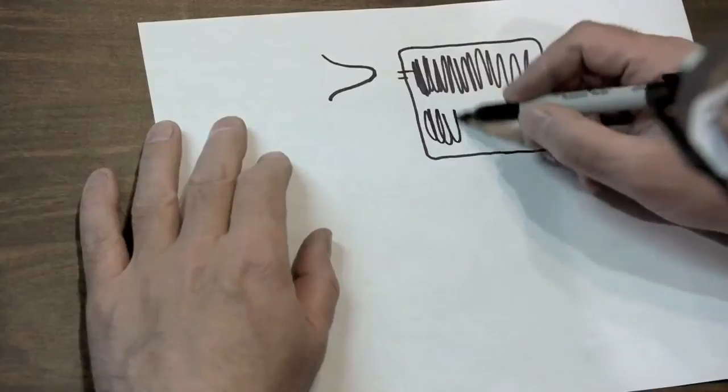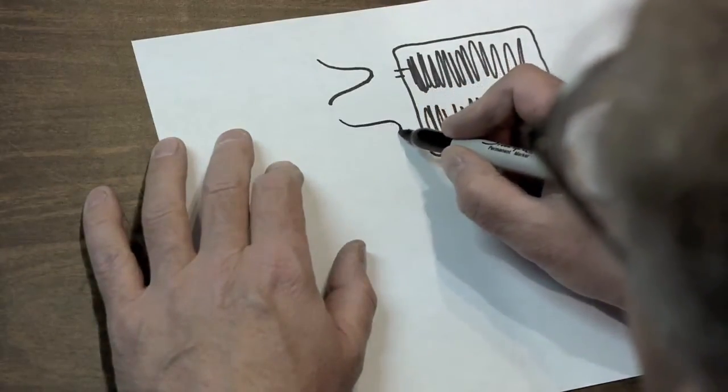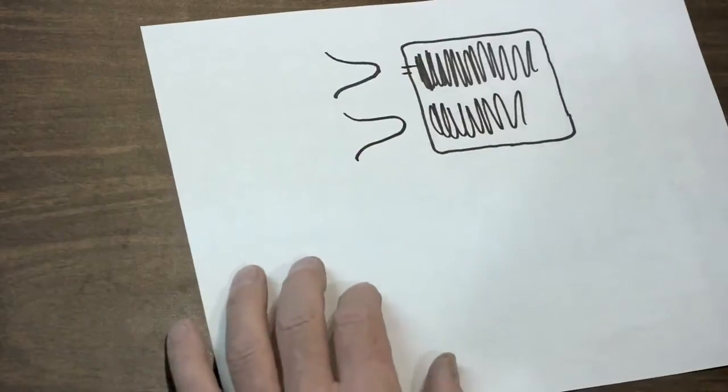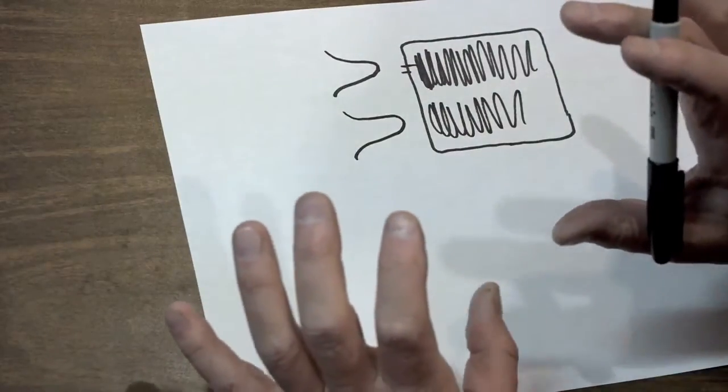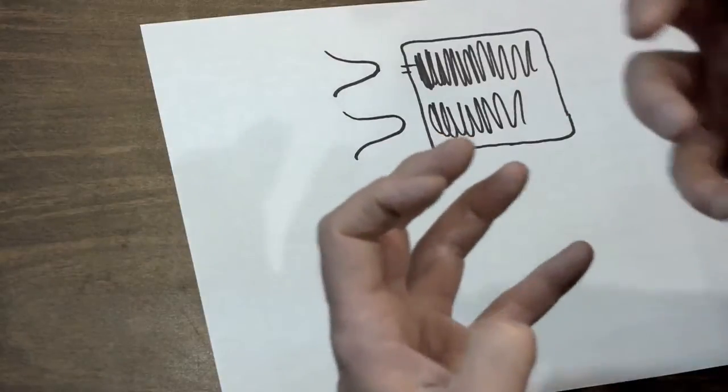So going back to my drawing here, here are the two noise waves with the two probability distributions. Remember the analog phosphor is accumulative. It's kind of acting like an analog memory.